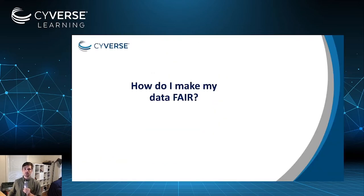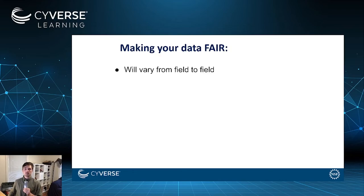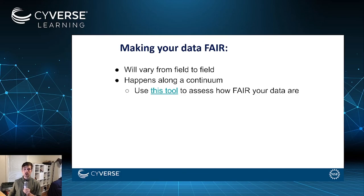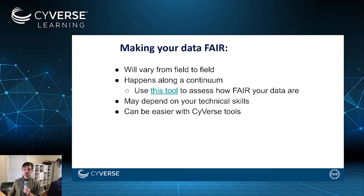So how do you make your data FAIR? It's going to vary from field to field. Some fields may have more restrictions on the privacy of data, such as medical data. It happens along a continuum — making your data more FAIR isn't necessarily something you'll be able to do all at once, and if there are restrictions for various reasons on your ability to make the data FAIR, it shouldn't mean you should give up on it entirely. You can use this tool linked here to assess how FAIR your data are. Making your data FAIR may also depend on your technical skills, but it can be much easier with CyVerse tools.